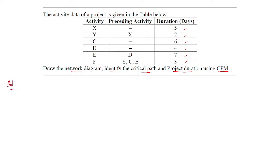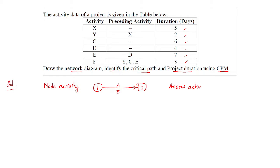Now let us look at the solution. We are going to prepare an arrow or node activity diagram. A node is prepared between activities shown with an arrow mark and another node — this is the first node, this is the second node. The activity label is written on the arrow and the duration is written alongside. This is the arrow activity format where nodes are connected by activity arrows and we are provided with activities and durations to connect the nodes.